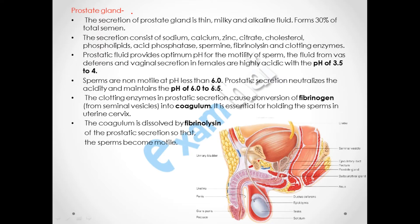The prostate gland is also an accessory duct that adds its constituents to the semen, contributing 30% of the total semen. The seminal vesicle adds 60%, the prostate gland adds 30%, and 10% is sperm itself. As seen in this diagram, the prostate gland is joined by the seminal vesicle and the vas deferens so that semen can be added to the sperm.